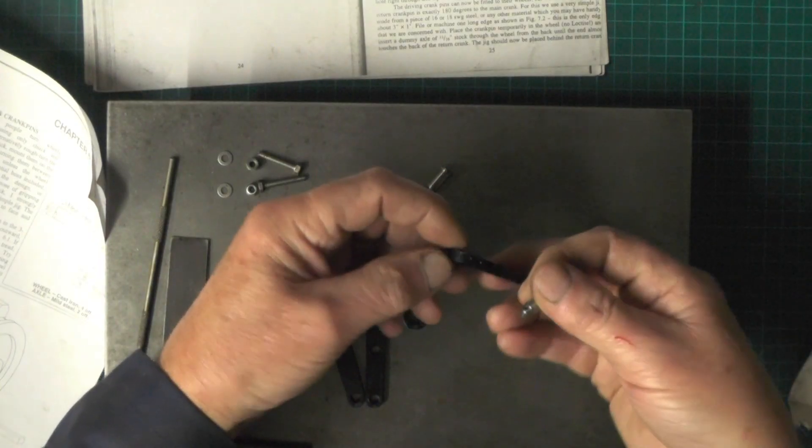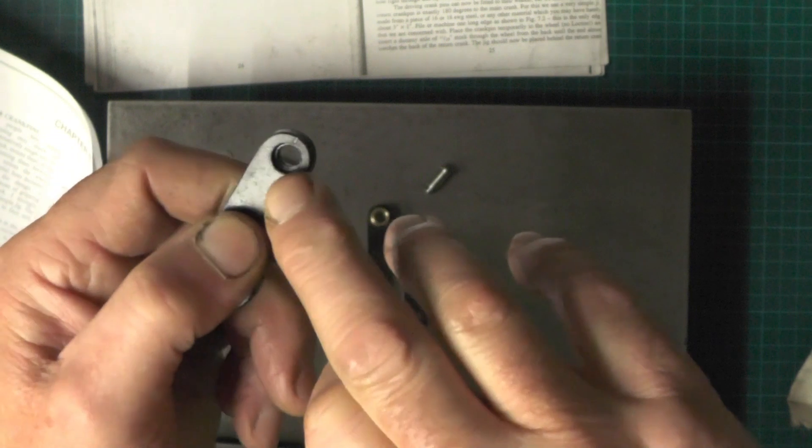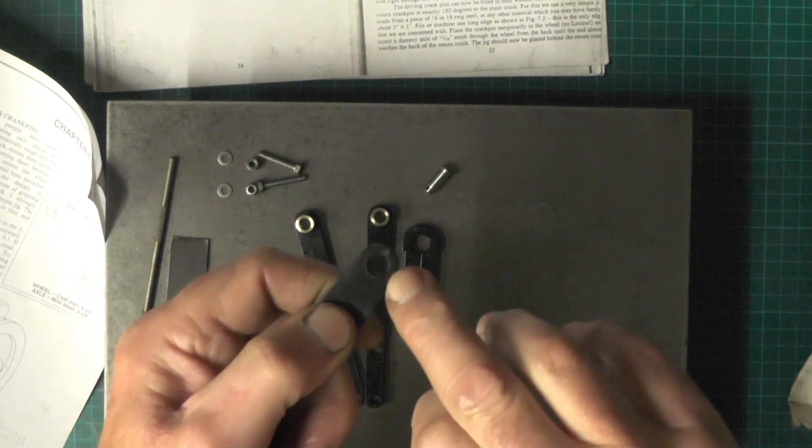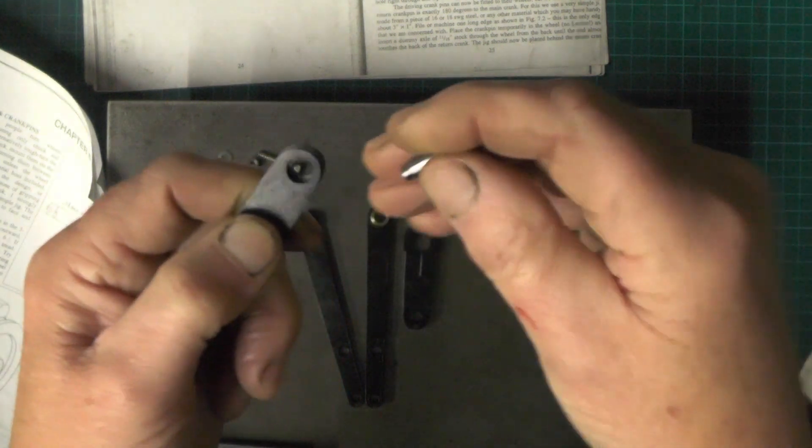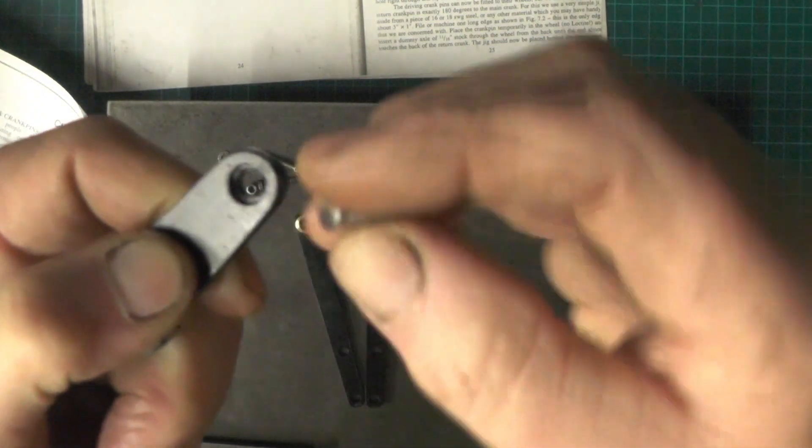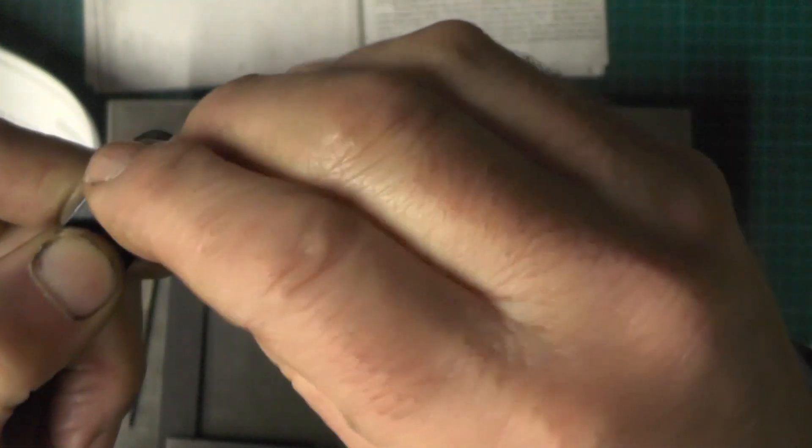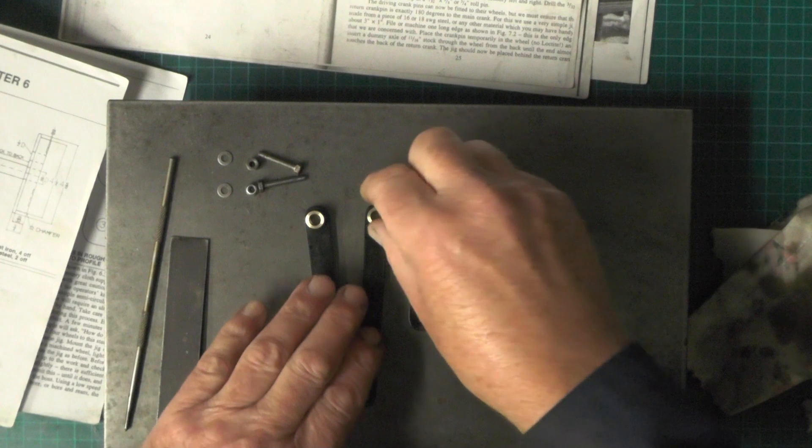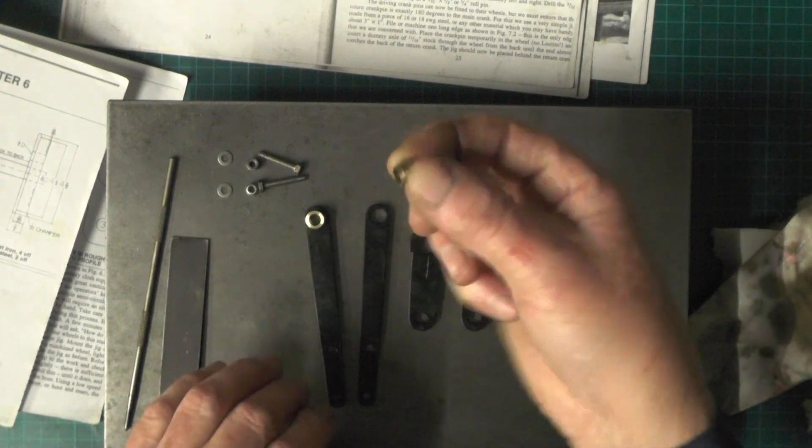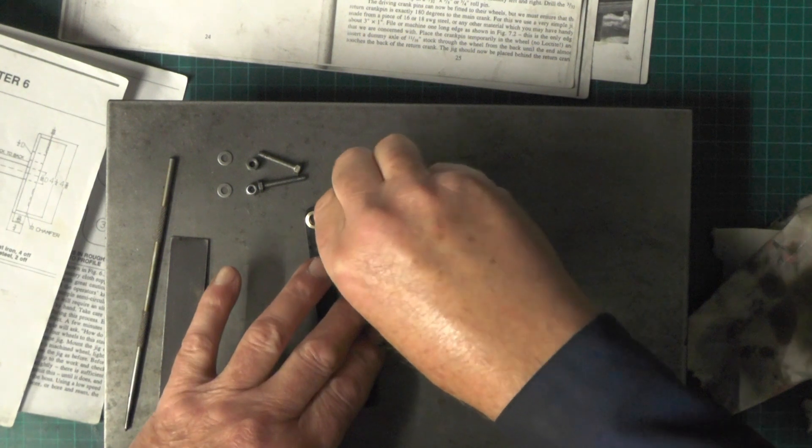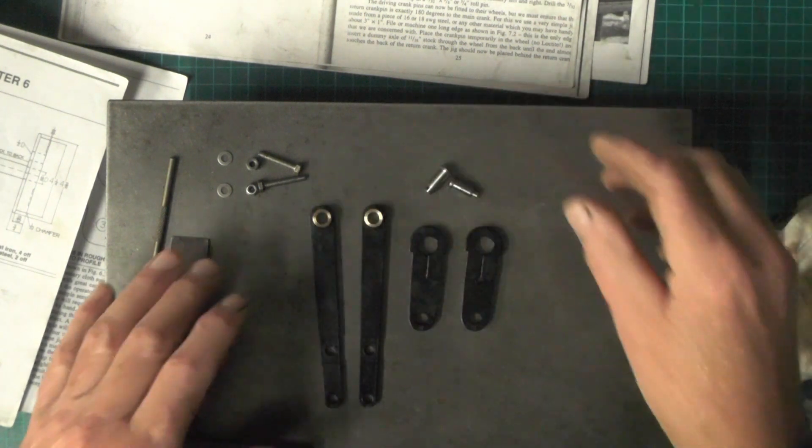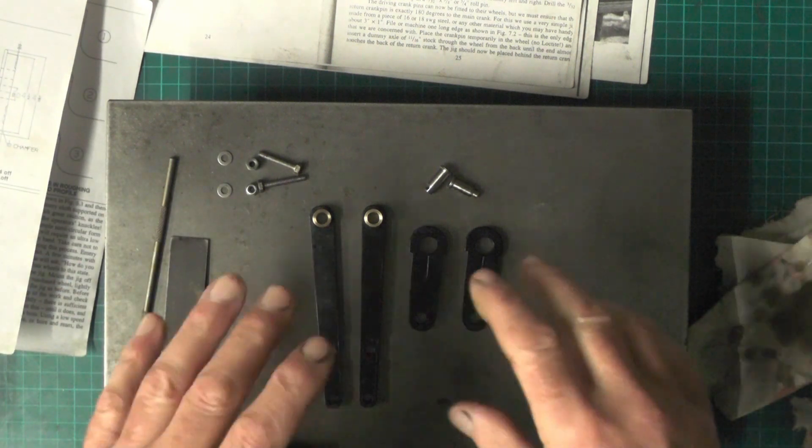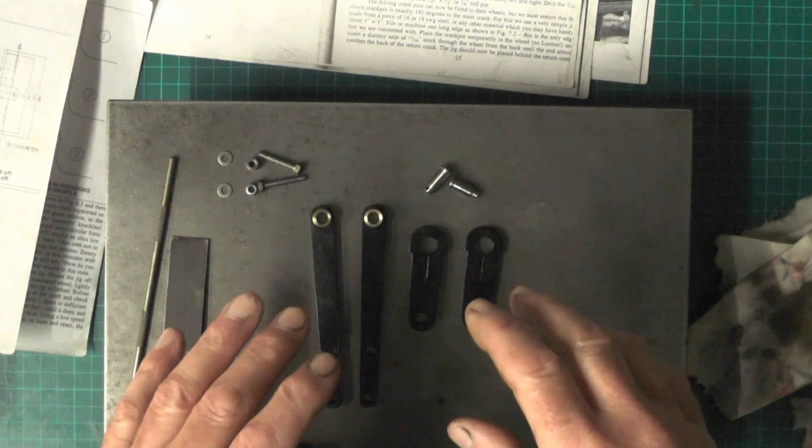And they're just going to press into the recess on the back of the return crank. There's a shallow recess and the head of that will press into that recess. And then I've also got these bushes to press into the vibrating lever, and then I'm ready for setting these up onto the return crank pin on the wheels.